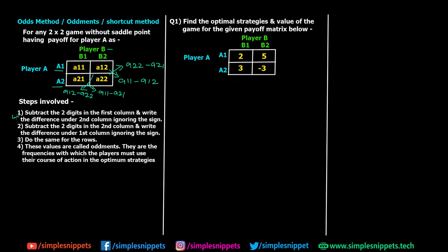These values are called oddments, and they represent the frequencies with which each player must use their course of action in the optimum mixed strategies. You'll understand this more clearly when we solve the numerical, and we'll also see how to calculate the value of the game, that is the V value.